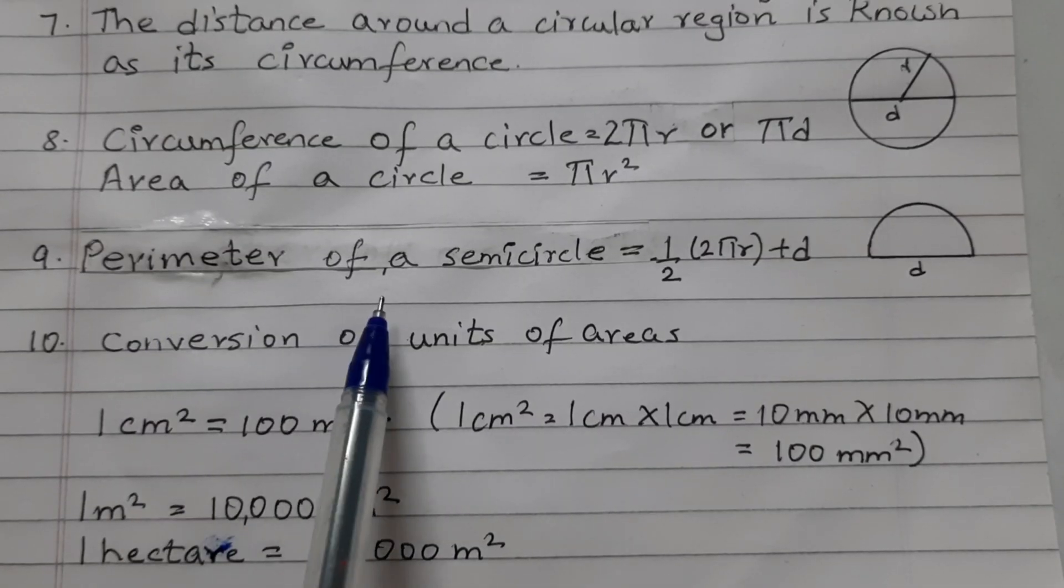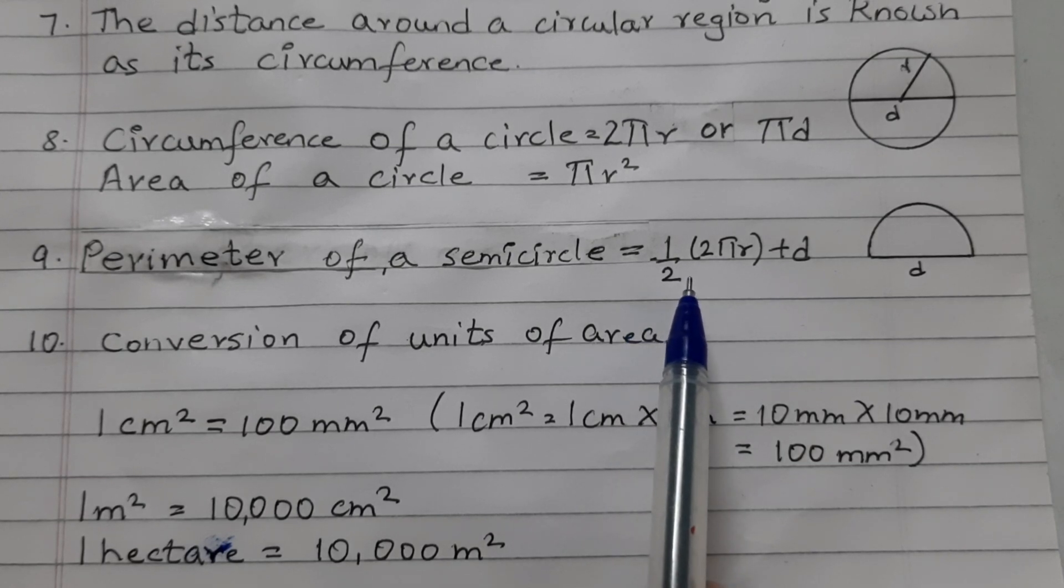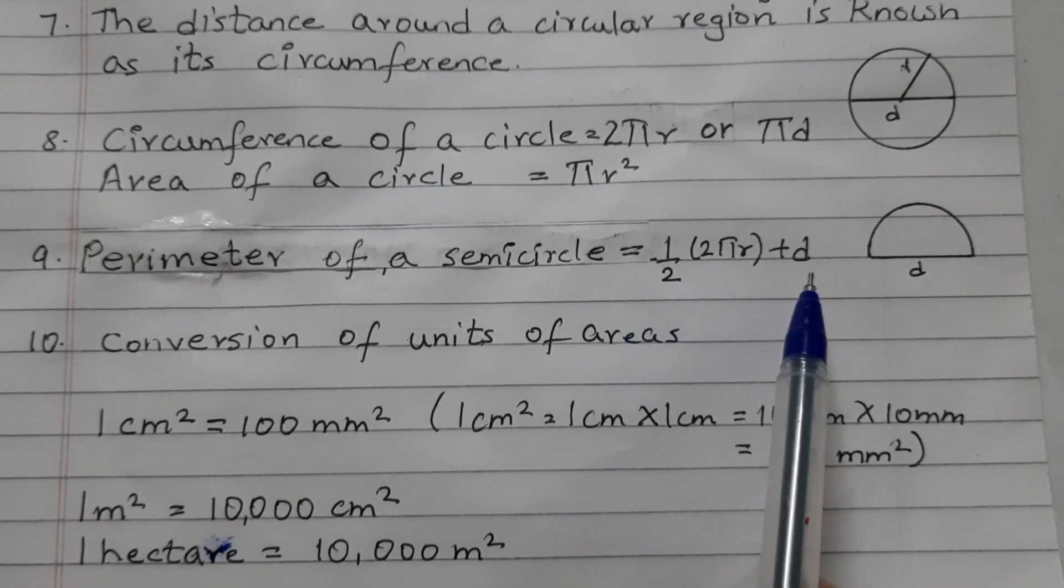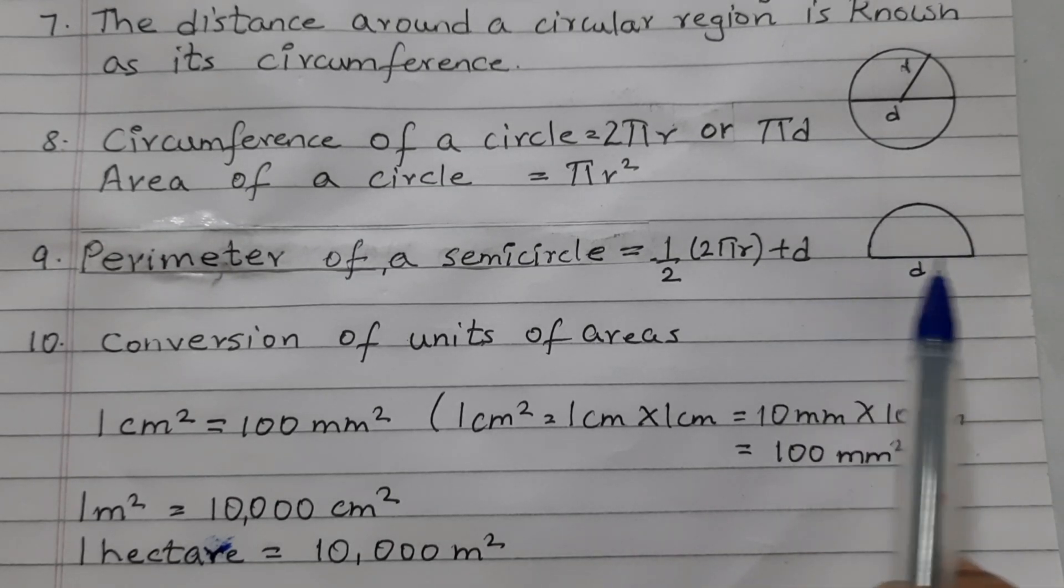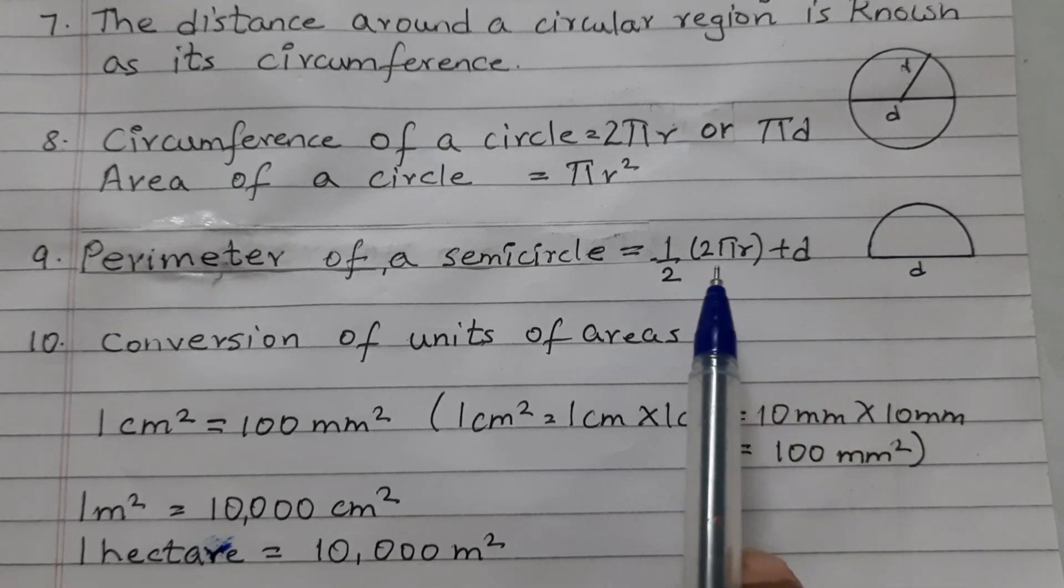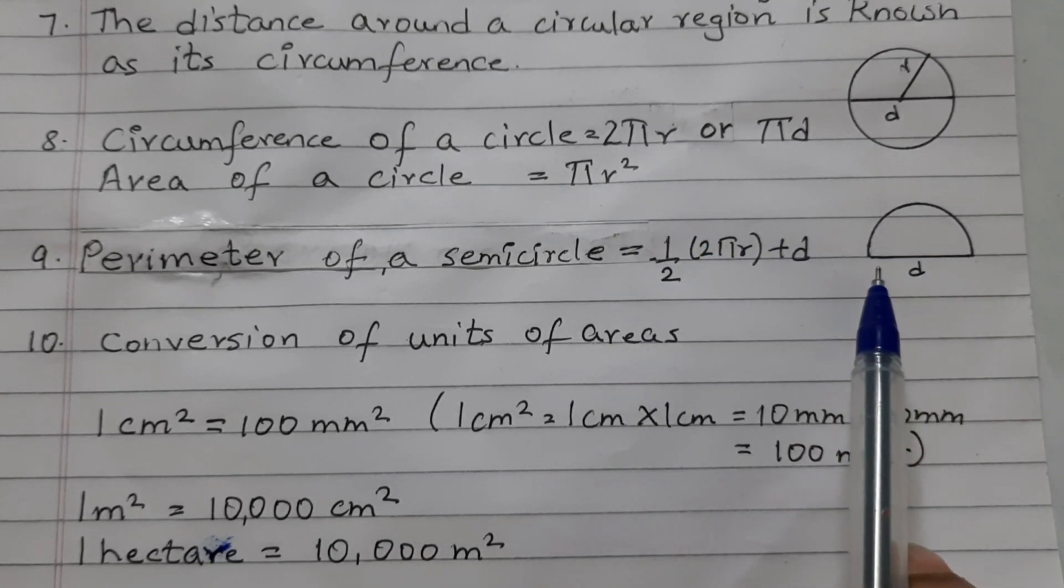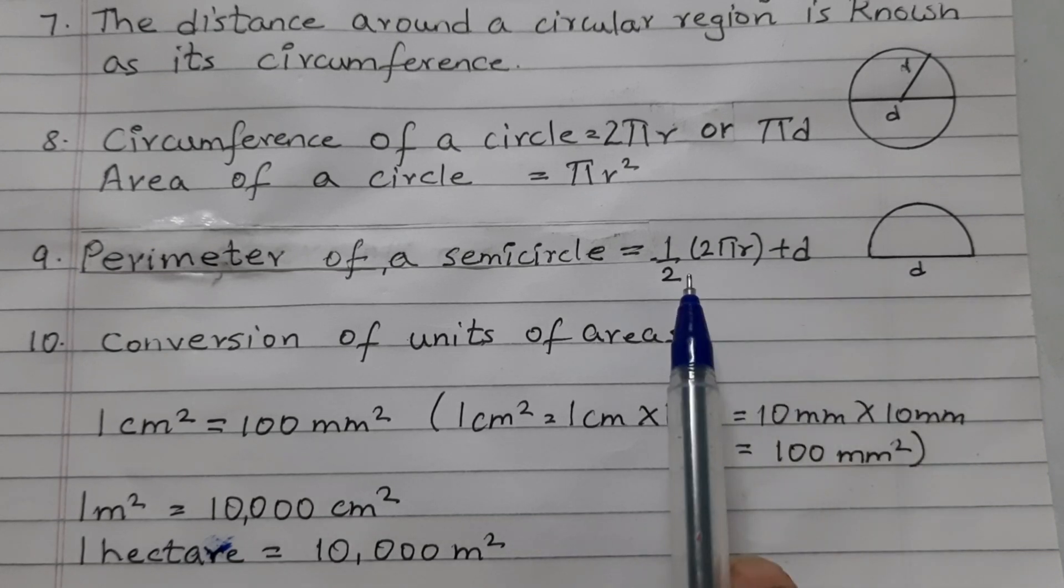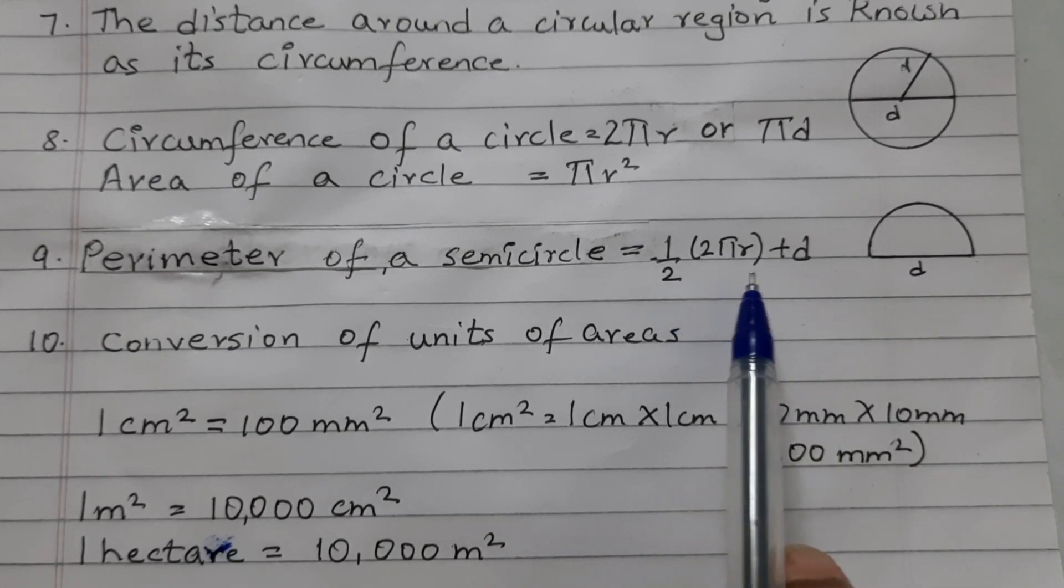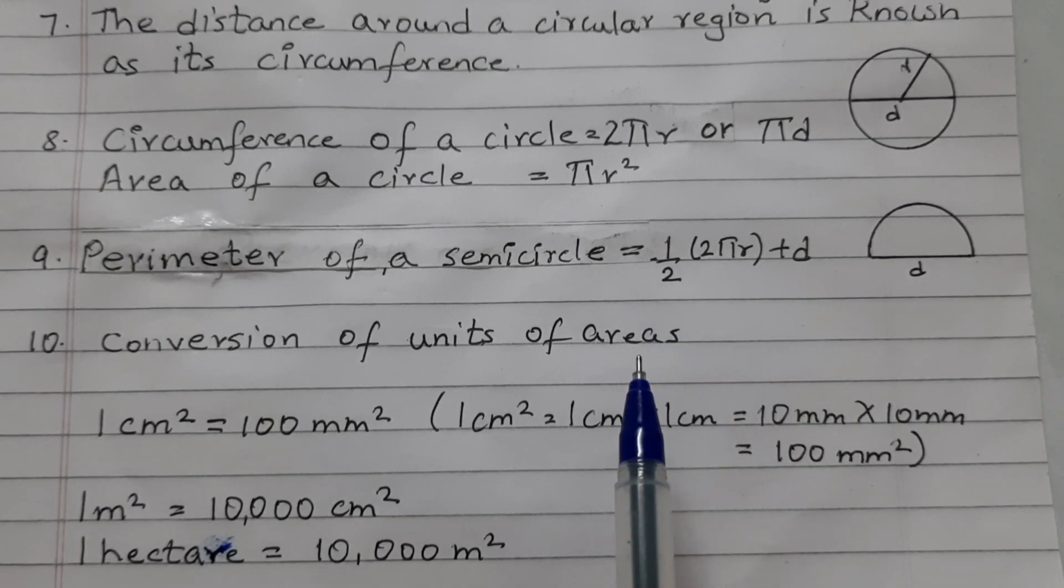Perimeter of a semicircle is equal to 1 half into 2 pi R plus D. So we want to find the perimeter of this, that is half of the circle. So this half of 2 pi R, that is 2 pi R and this diameter. So it is half into 2 pi R plus D or you can also write it as pi R plus D because 2 and 2 would cancel out each other.